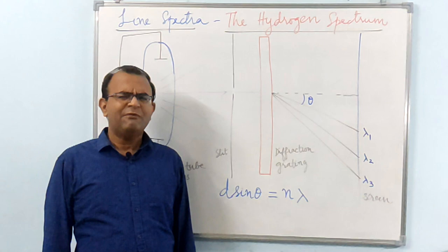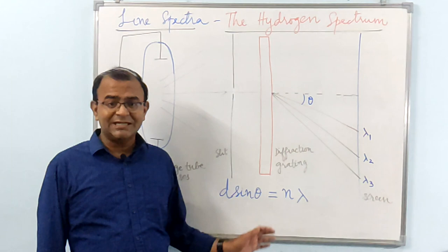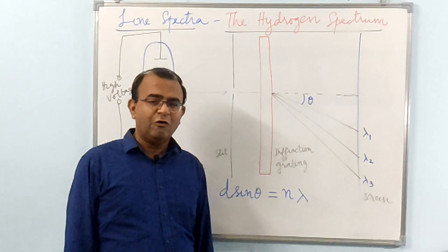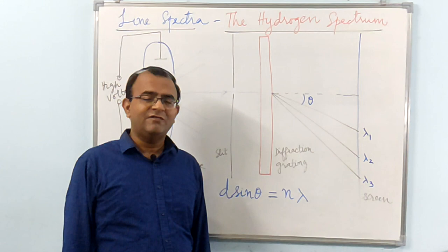One of the important research problems pursued around that time was establishing an empirical relationship between the various lines in the hydrogen spectrum. There were four prominent lines in the spectrum as I drew in an earlier diagram. Remember that there were lines that were not visible also but that story is for later.